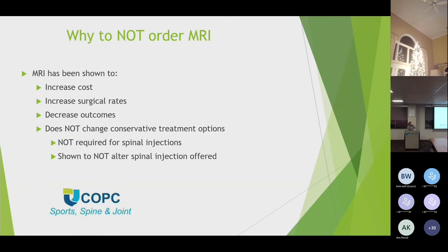Why not to order an MRI: obviously cost, and increased surgical rates. A lot of things show up on MRI that mean very little. Early in my practice, radiologists would read MRIs with two-millimeter disc bulges at every single level, and patients would call freaking out because they have a two-millimeter disc bulge at five levels. There are lots of things on an MRI that don't really mean anything, so you always have to correlate findings with the patient's complaints and physical exam.